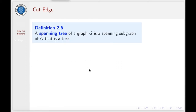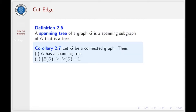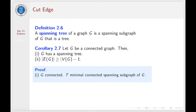Now, a spanning tree of any graph G is a spanning subgraph of G that is a tree. We have this corollary: let G be a connected graph. Then first, G has a spanning tree; and second, the number of edges of G is at least the number of vertices of G minus 1. Let's see the proof.